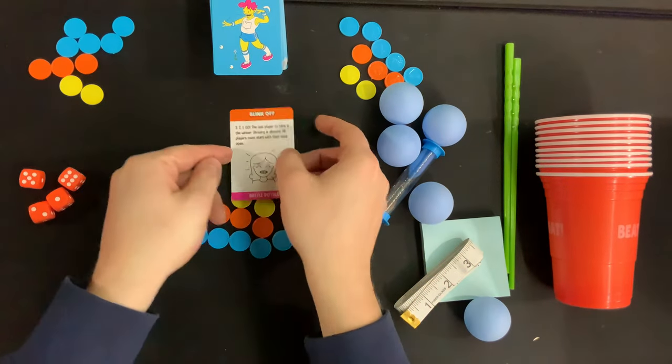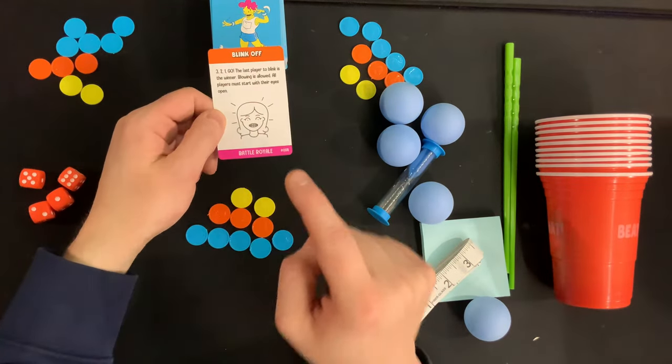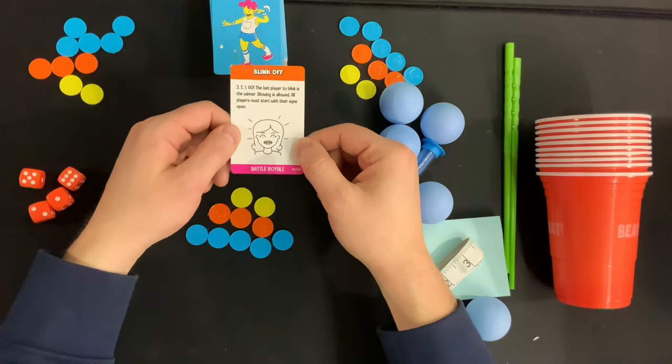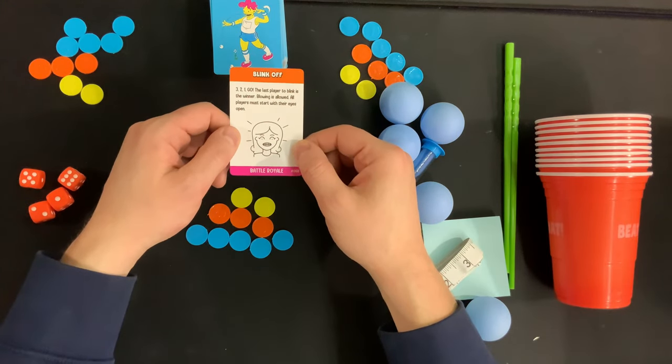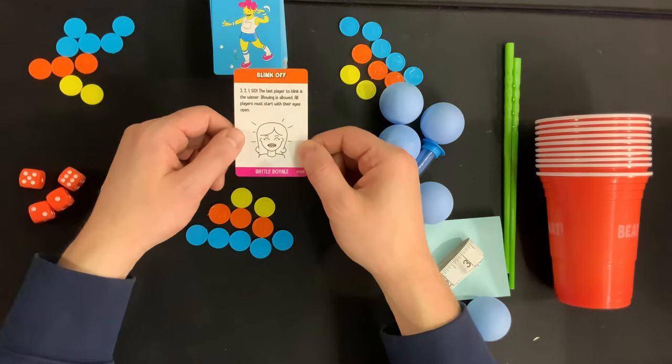So this is a blink off. This is a battle royale challenge. And the text on the card will tell you exactly what to do. Three, two, one, go! The last player to blink is the winner. Blowing is allowed. All players must start with their eyes open.